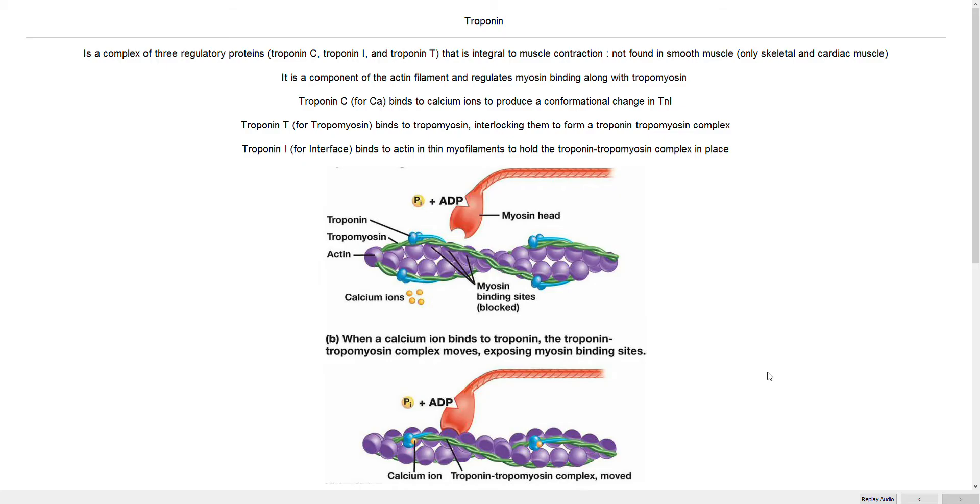So troponin is a protein complex composed of three subunits: troponin C, troponin I, and troponin T.